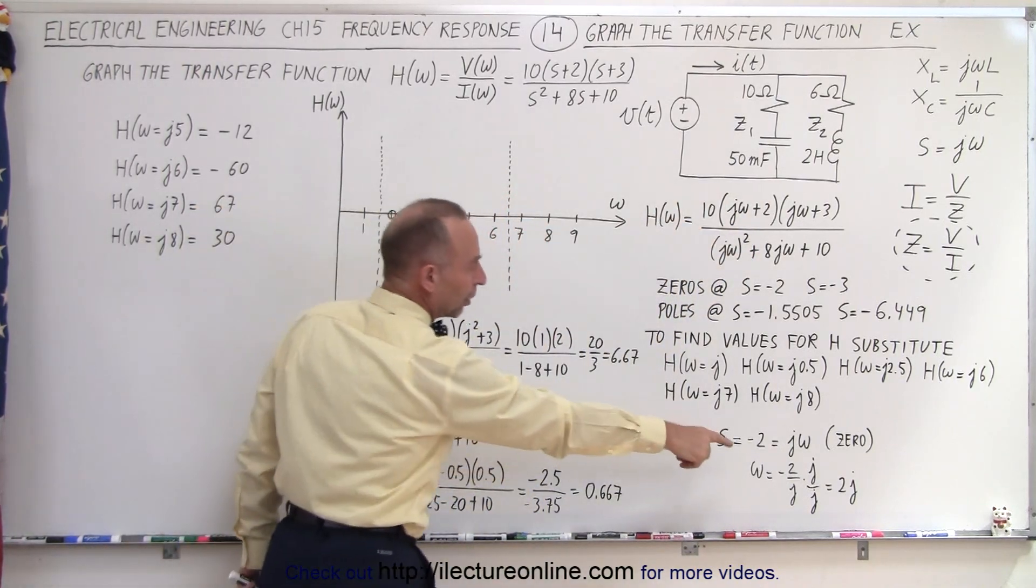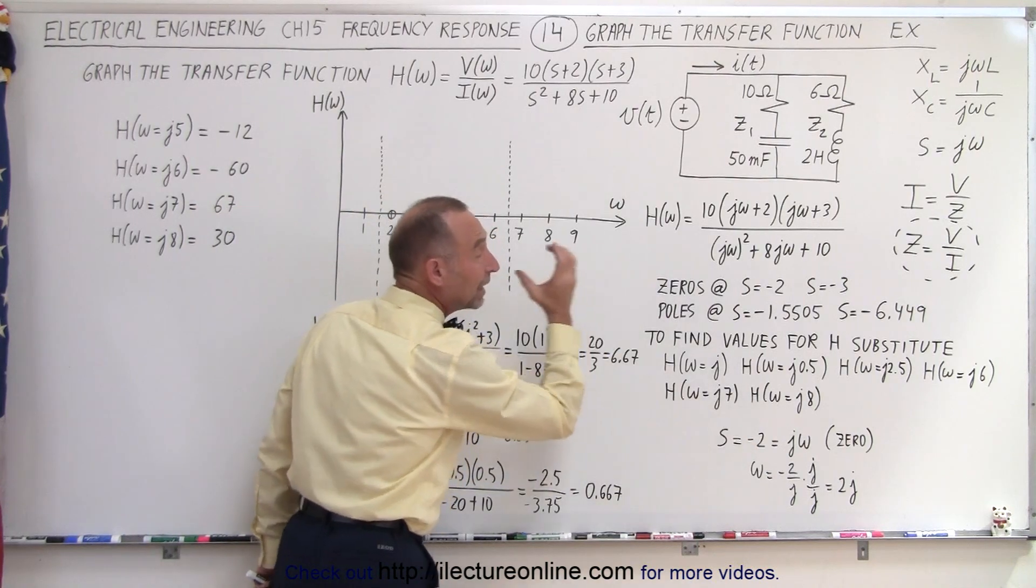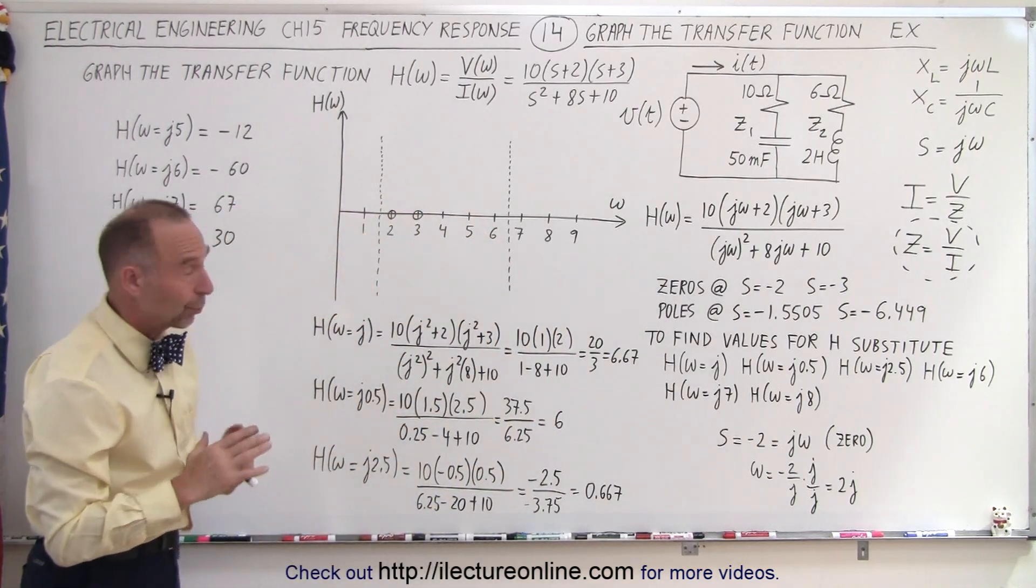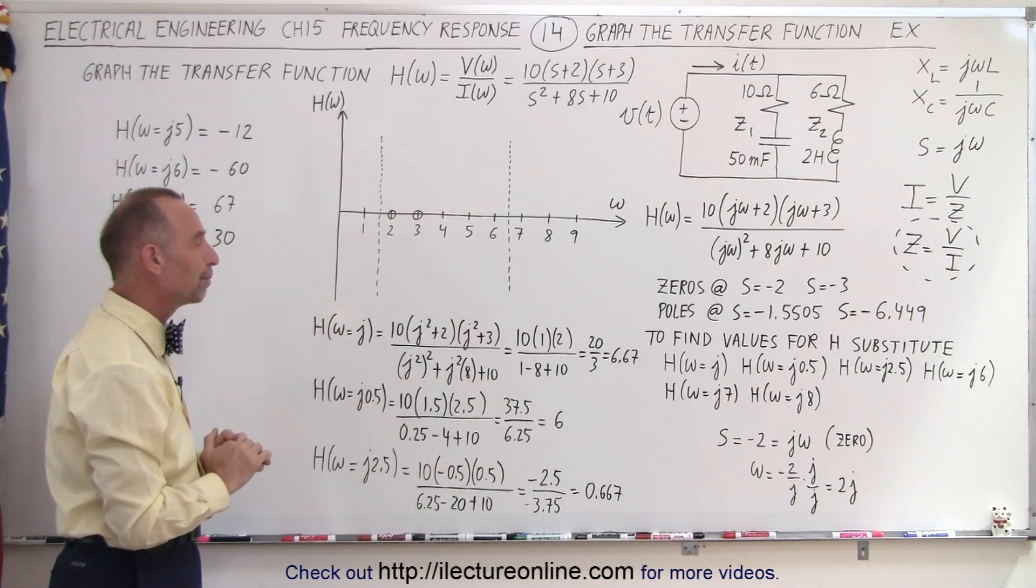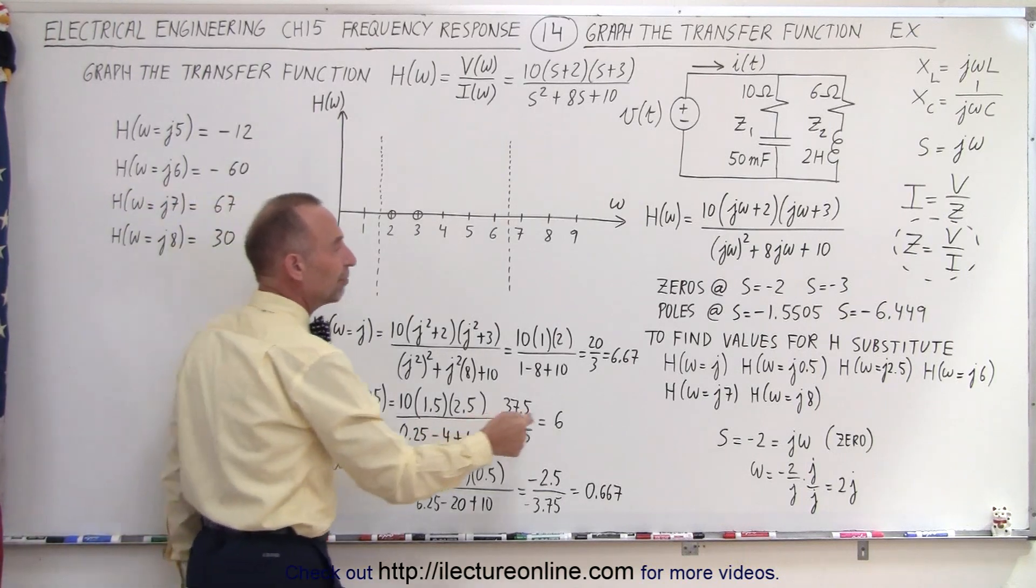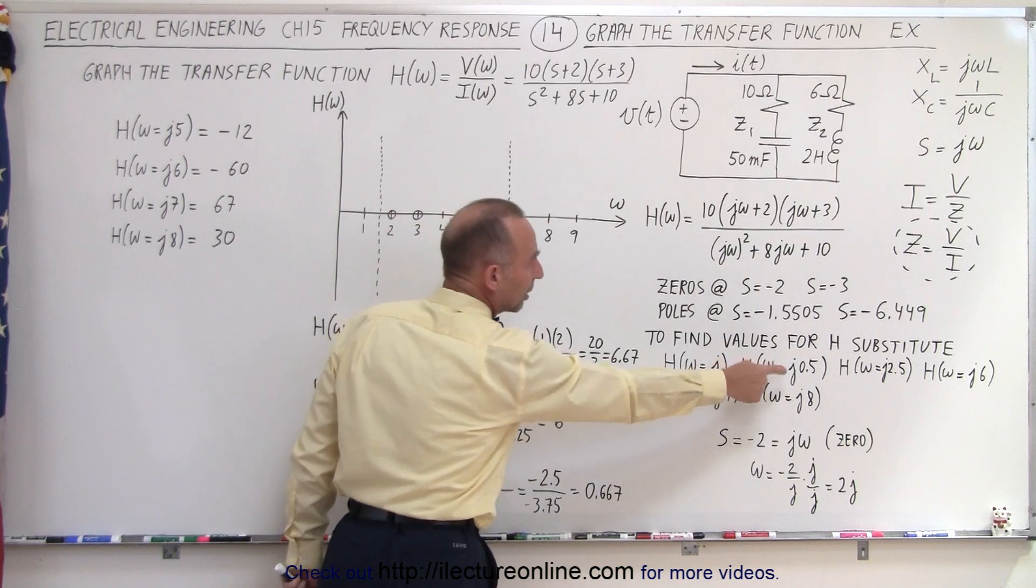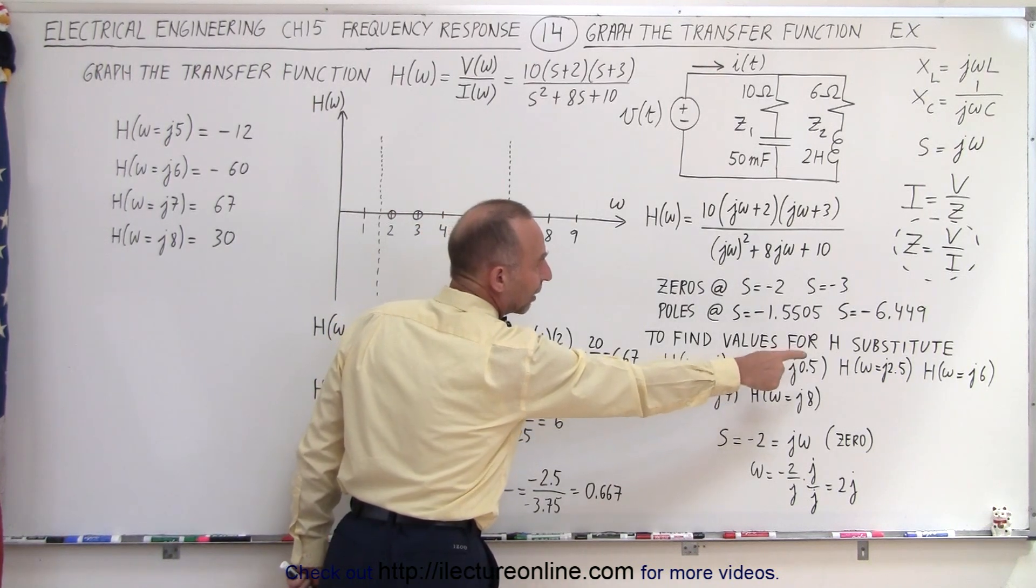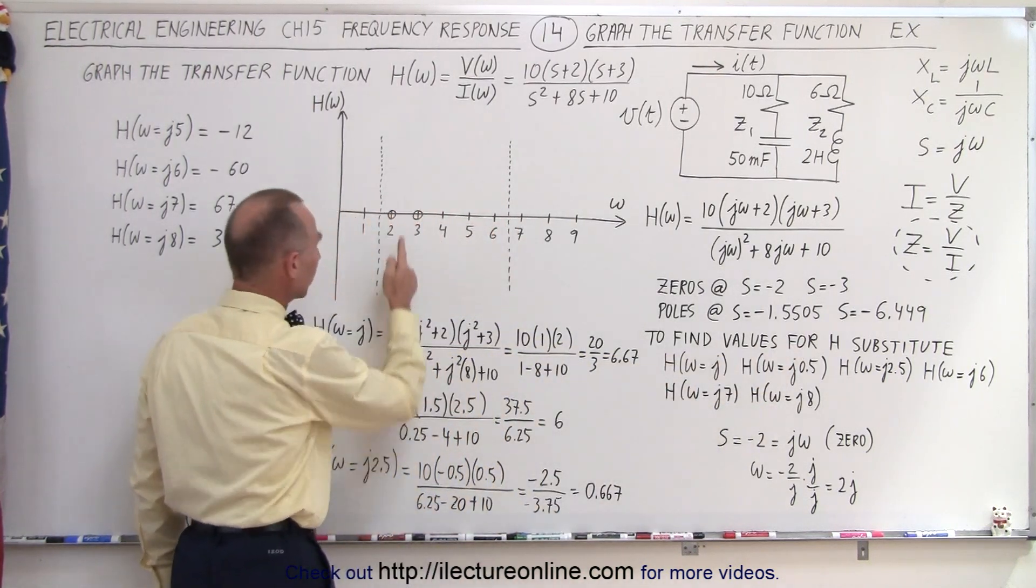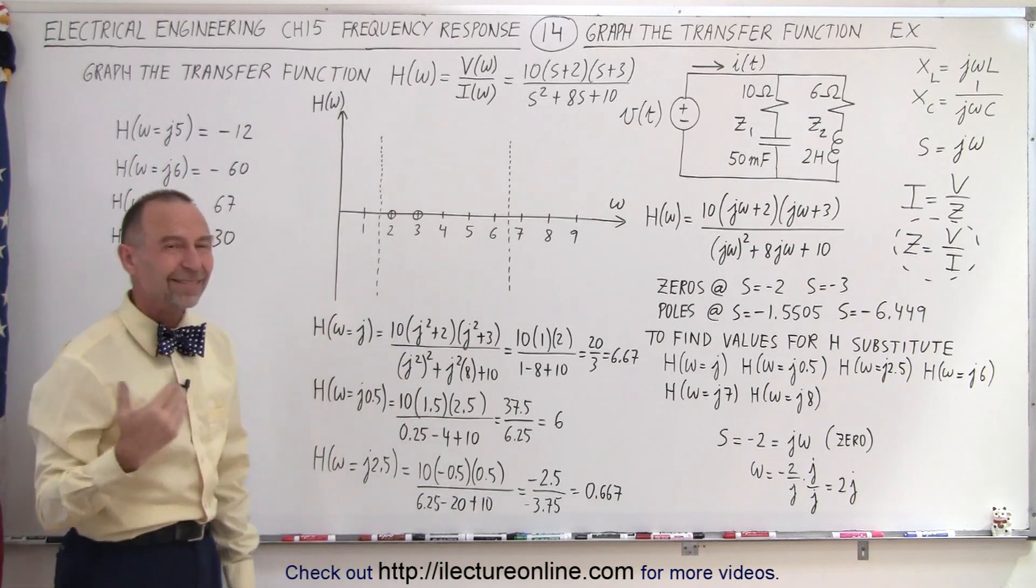If we do that for omega equals 2j, you will indeed get a zero, but of course we already knew that. We don't need to do that. So what we can do is find values when we substitute other things such as omega equals j, omega equals j0.5, j2.5 for the point between the two zeros, and so forth, and let's see what we get.